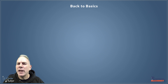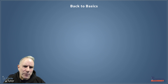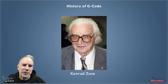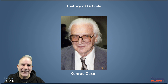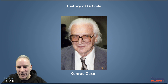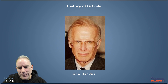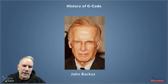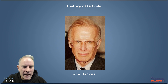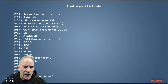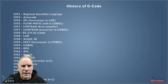To get an appreciation of G-Code we have to go right back to the beginning. Back in the early 40s, Konrad Zuse invented programming languages as we know them — the high-level programming languages — that is, languages we can understand and not just zeros and ones. In 1957, John Backus invented Fortran, which is still one of the main languages used today, and if we look at the history of programming languages we can see Fortran there in 1957.